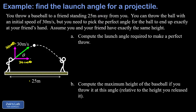One simplifying feature of this problem is that we have a completely level projectile motion problem. We're told these two people have exactly the same height, so our starting and finishing y-coordinates are going to be the same. We stick our origin at the point of release of the baseball, so our x and y coordinates are zero there, and our final y-coordinate is also zero.